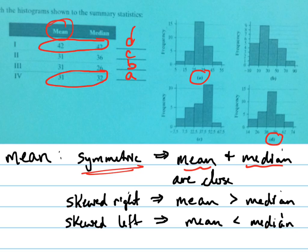If the graph is skewed to the right, this one right here is skewed to the right. B is skewed to the right. Then the mean is greater than the median. So if we look at our answer here, you can see that the mean is greater than the median.